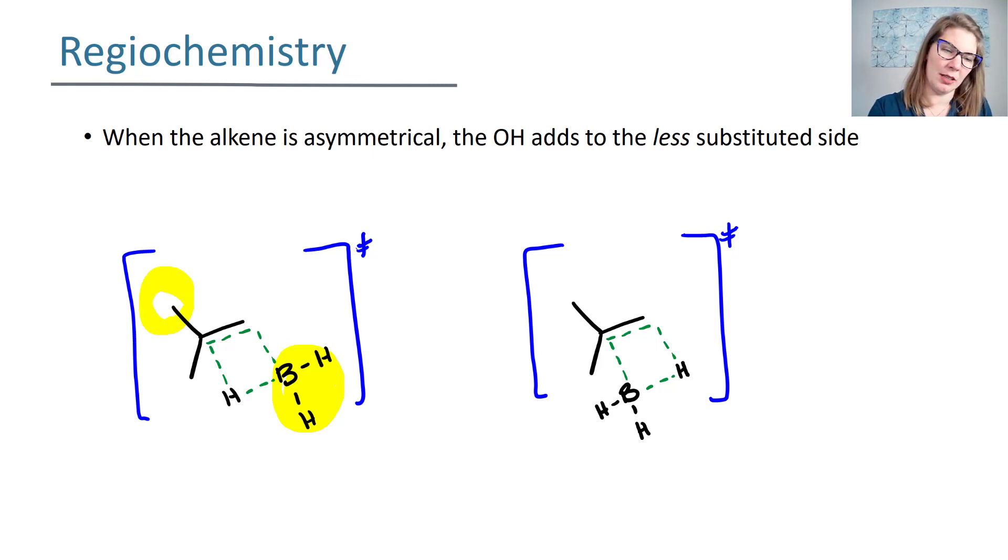Here's my more substituted side where I've got these big methyl groups over here. Notice on the left how my BH2 is not overlapping with my methyls. But now on the right I've got my BH2 and then I have a methyl and I've got a methyl. What is happening here is your BH2 is too close to those methyl groups and that makes a crowded transition state.